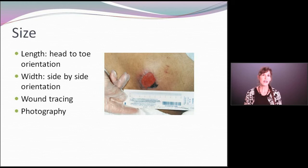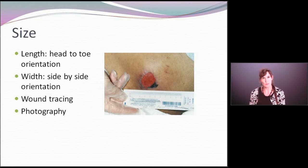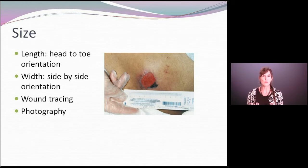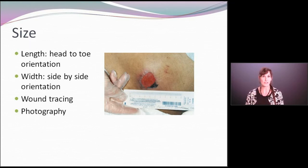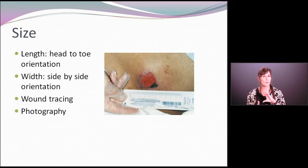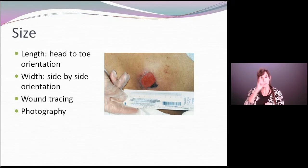Size is very, very important. When we measure size, it is always with respect to the orientation of the patient. The length of the wound is always measured from head to toe, and the width is always measured side to side, regardless of the shape or characteristics of that wound. So length is always head to toe; width is always side to side.